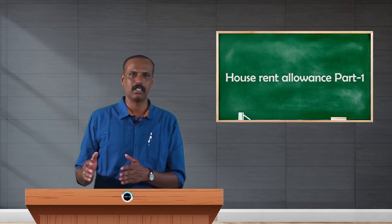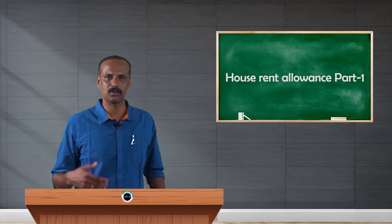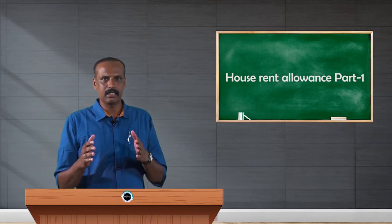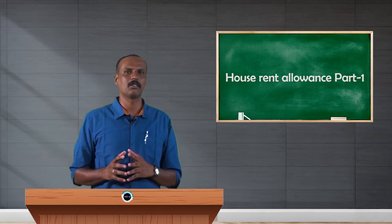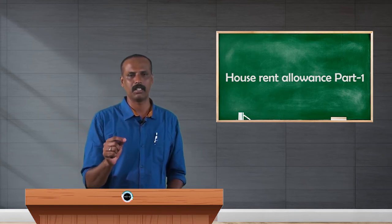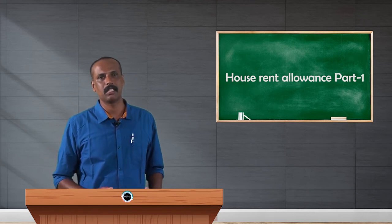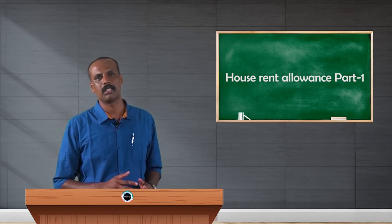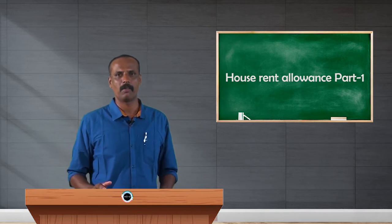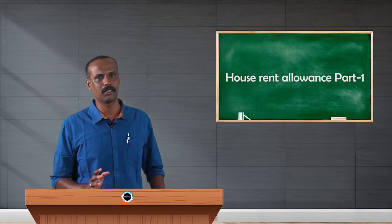Because the employee is working at a place where he sometimes does not have a house property, and to meet such rental expenditure, an allowance will be given by the employer. This is included in the salary, but the entire amount is not included, because section 10 subsection 13A allows a certain amount of exemption of HRA. If certain conditions are satisfied, a certain amount of HRA is exempted and the remaining amount is included in the salary income of the employee during the previous year.